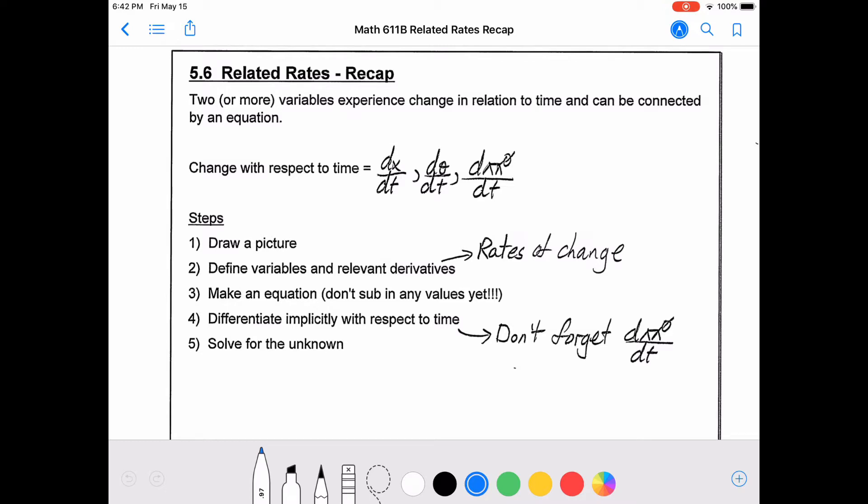And when we talk about that change, we're talking about derivatives with respect to time. So it could be a change in x with respect to time, or theta, or my favorite general variable, a poorly drawn unicorn, just to represent that it could be literally anything.